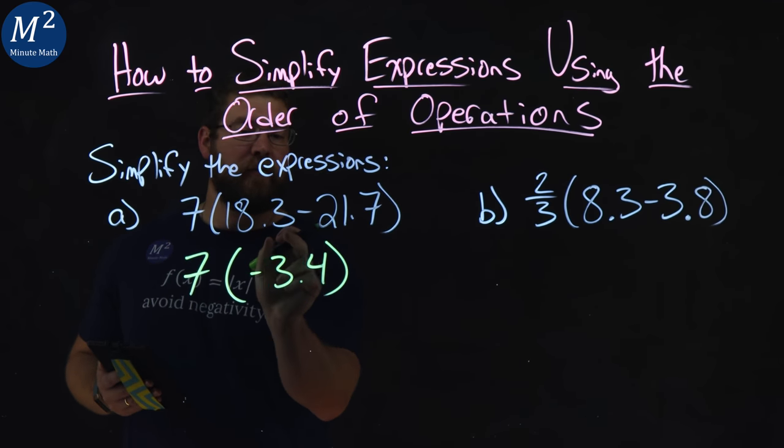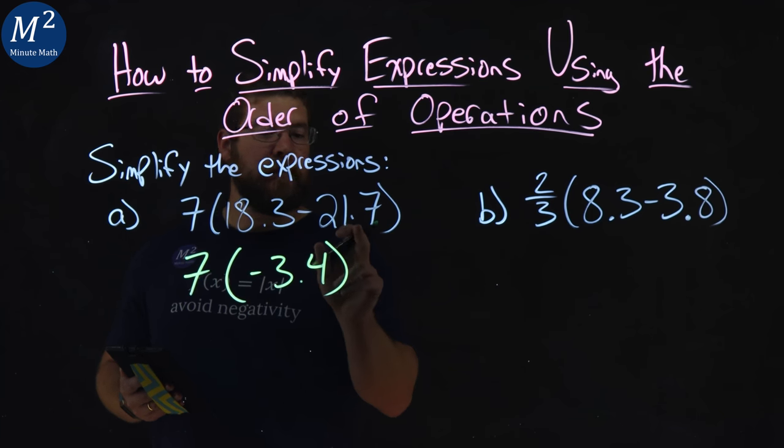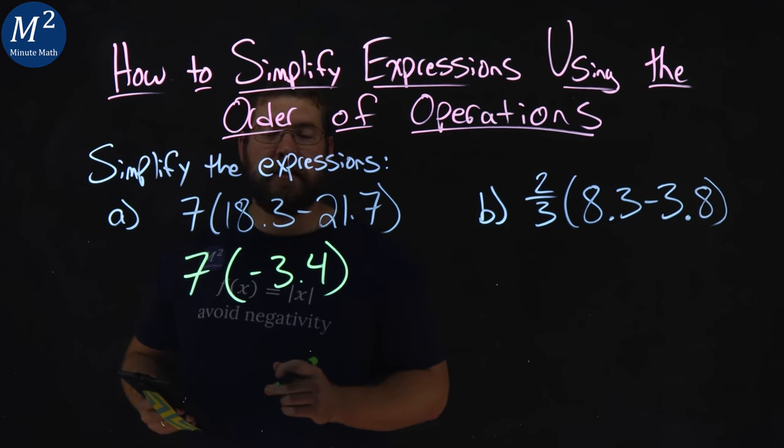We simplify it inside, right, the parentheses. Now notice, it's a negative number, and it had to be because 21.7 is larger than 18.3.